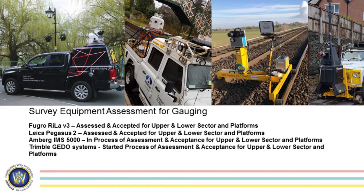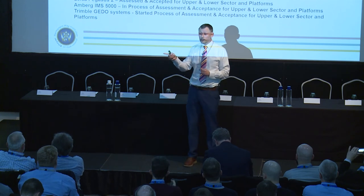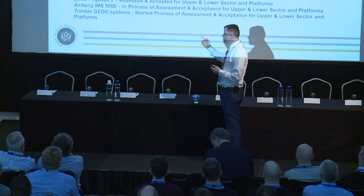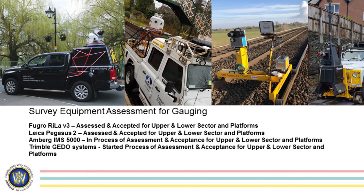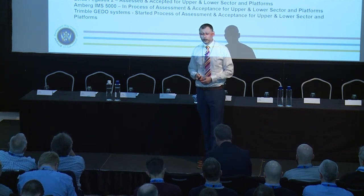A quick touch on the gauging approval process we went through. Ryla version 3 has been approved and accepted for upper, lower and platform gauging assessments and is being incorporated into ClearRoute. So there'll be no need for people to fudge what system they put into ClearRoute to get the answers they want — I know you all do it, because we haven't gone through this process in the past. Pegasus 2 will be going onto ClearRoute in the near future, within the next four weeks. The Amberg IMS 5000 system is in the process of being assessed, and all the Trimble suite of survey products are going into the system. So we're going to catch up from the survey world on how we implement and use that information in the future.